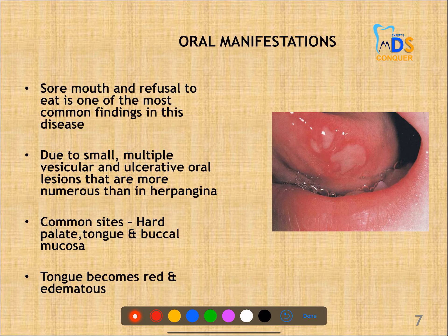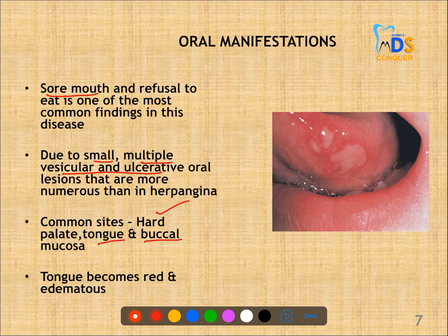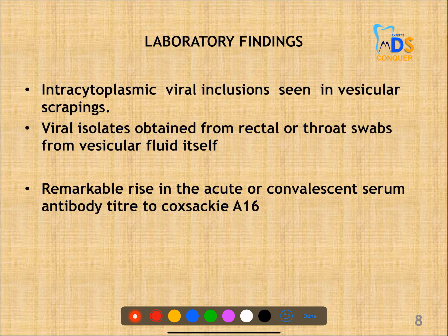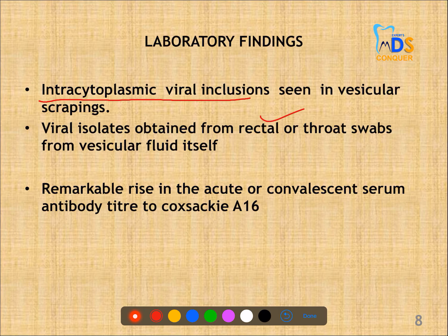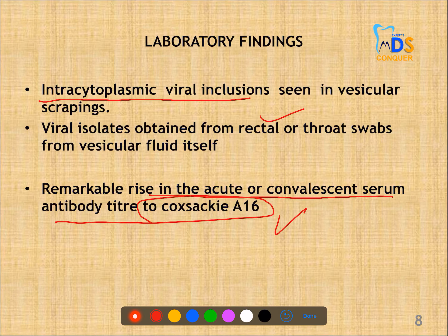Oral manifestations include sore mouth due to small, multiple vesicular and ulcerative lesions in the oral cavity. The common sites for oral manifestations are the hard palate, tongue and buccal mucosa. The tongue will become very red and edematous. In laboratory findings, you can see intracytoplasmic viral inclusions. Viral isolates can be obtained from rectal or throat swabs and from vesicular fluid. There will be a rise in acute or convalescent serum antibody titer to Coxsackie A16.